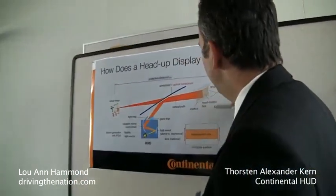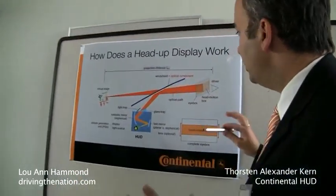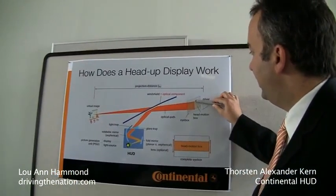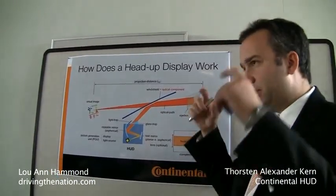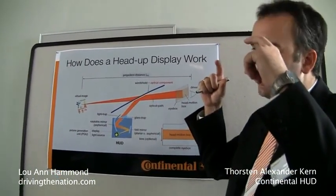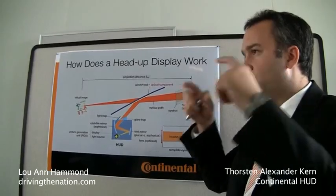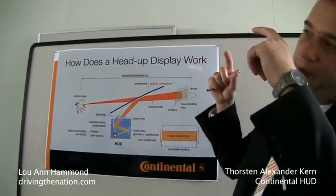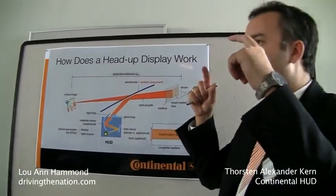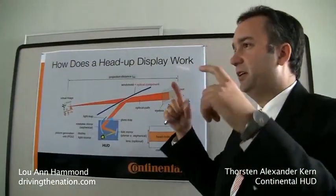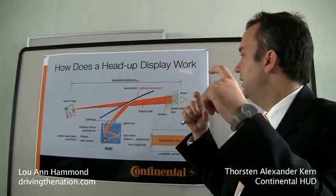The head motion box is a virtual component. It just means that we define the area where the driver can see the image. You may have noticed in the morning that if you move out of this area, the image will get cut. So this is the head motion box — it's a design criterion for us.